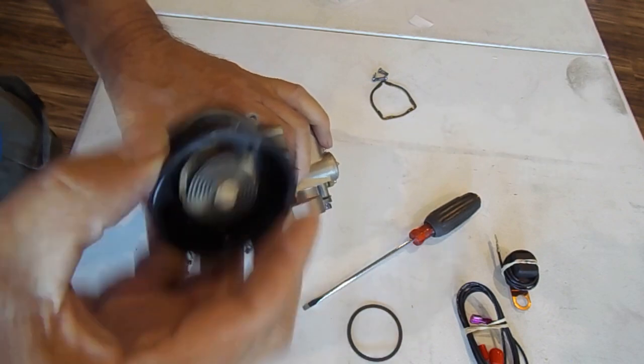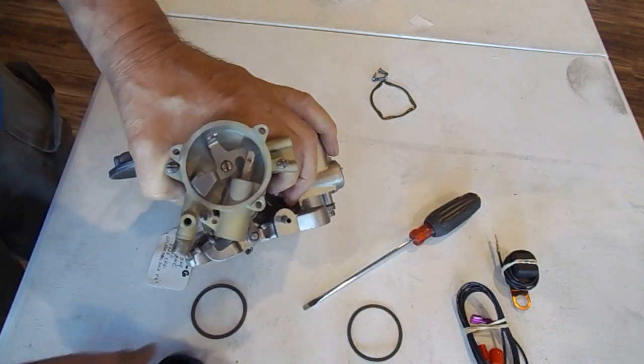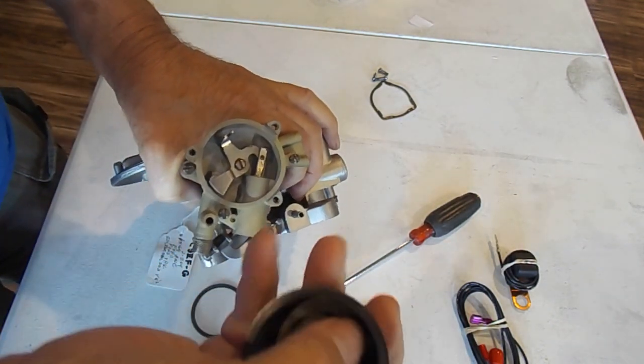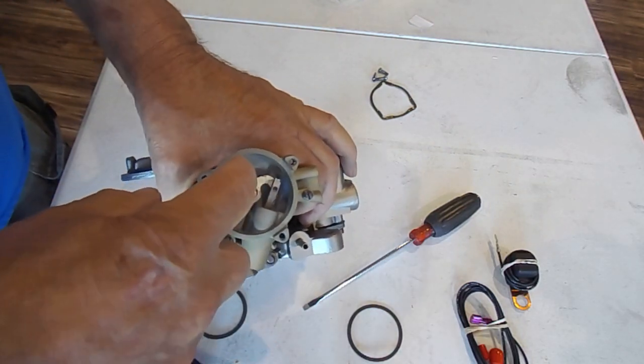Alright, so the first thing I did is I took the old choke out. This is the old choke, and see this little tab right here, it fit right in here in this little fork.